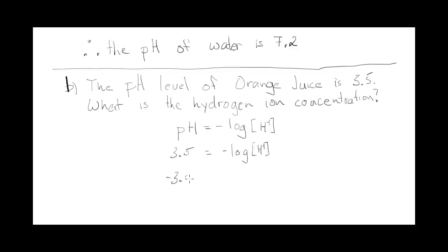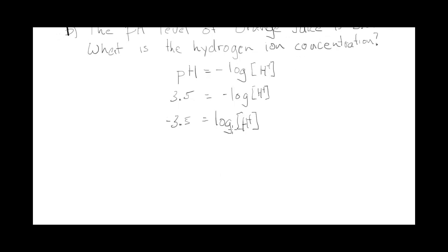So negative 3.5 equals the log of H plus and now I need to convert to exponential form. Remember this is 10 to the power, so this would be 10 to the power of negative 3.5 equals H plus.